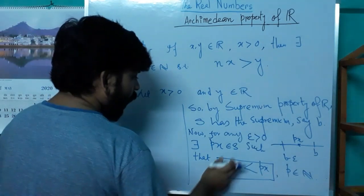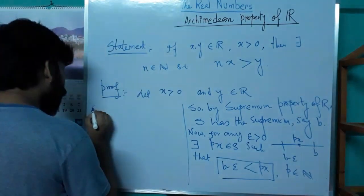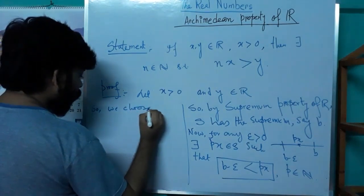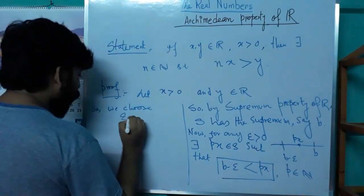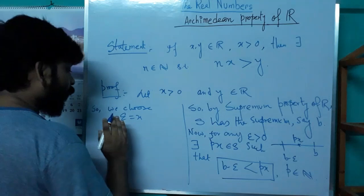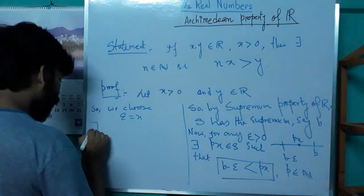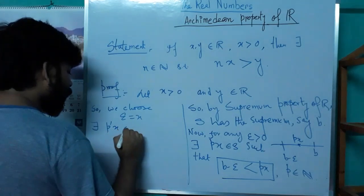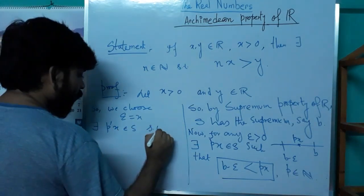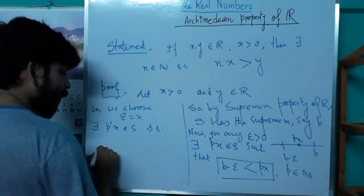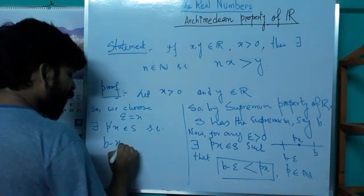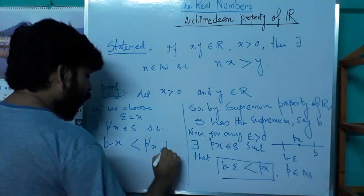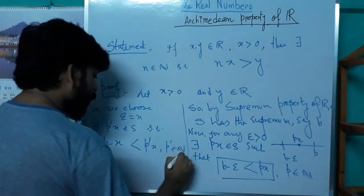Since this inequality is true for every ε > 0, we choose ε = x. Then for that epsilon, there exists an element P·x ∈ S such that B − x < P·x, where P is a natural number.